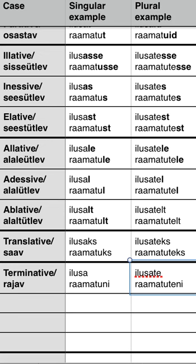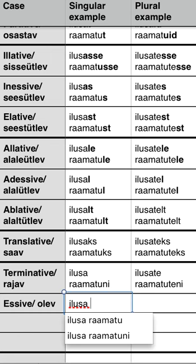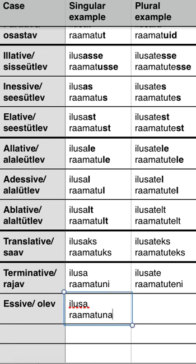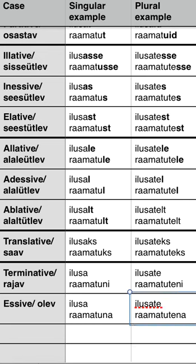Now let's move on to the second case in this block, which is ESSIVE — in Estonian it's 'olev'. Again, 'ilusa raamattu', but we're going to use 'na': 'ilusa raamatuna'. In the plural: 'ilusate raamatutena' — just add 'na'. An example: 'I felt as if I were a beautiful book' — 'Ma tundsin ennast ilusa raamatuna'. I know it might be very absurd, but we're just doing examples here.